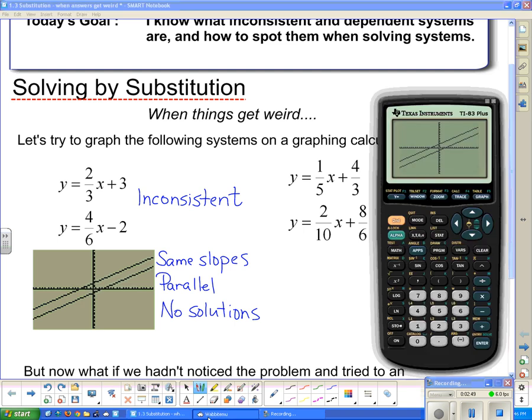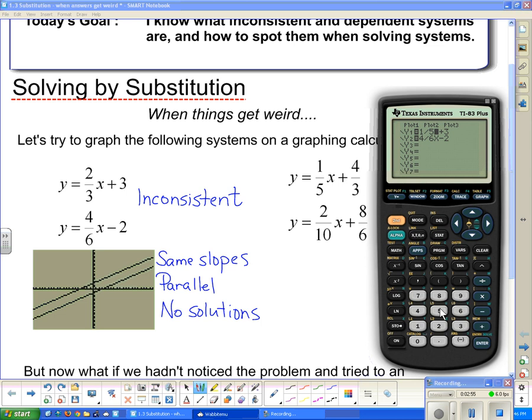y equals one-fifth, one divided by five x, plus four divided by three. Kind of a nasty y-intercept, but that's all right. And two divided by 10x plus eight divided by six. And let's graph it.